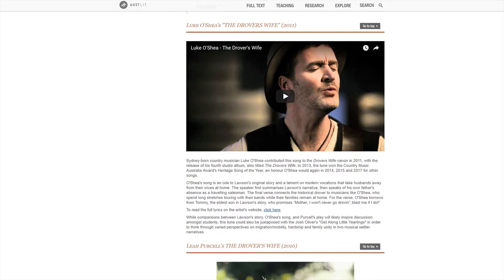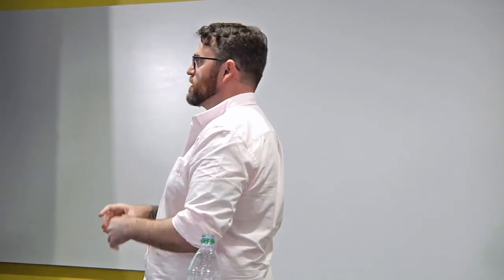But lest we think that everybody is super progressive and able to engage with these new politics, I present to you, Luke O'Shea and his song, The Drover's Wife, which talks about the story and the impact that it had on his childhood. And then talks about how his life as a troubadour keeps him away from his wife and children back home and how much he misses them. Like, I mean, right, but it won the Country Music Australia awards heritage song of the year. And this guy has made a career off of that one. He was a public school teacher, right?